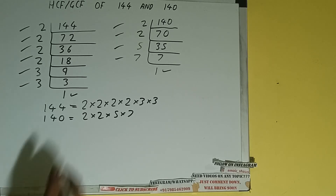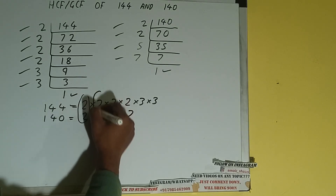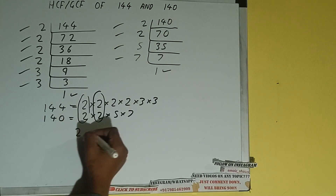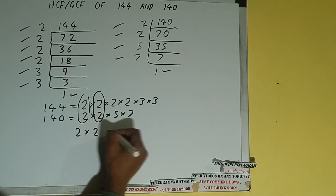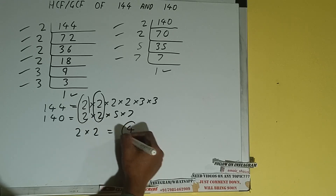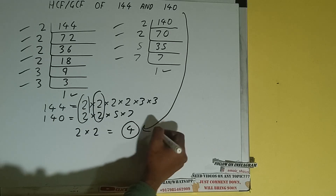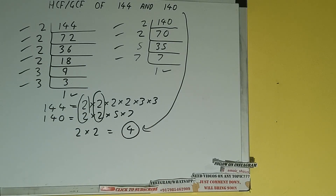We have one 2 in common and another 2 in common. Do we have anything else in common? No. So we have two 2s in common. If we multiply them together, we'll be getting 4. So the HCF or GCF of 144 and 140 is 4. If you found the video helpful, please hit the like button, do consider subscribing, and thanks for watching.